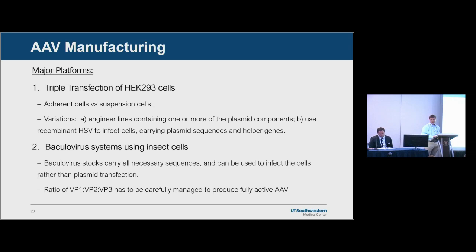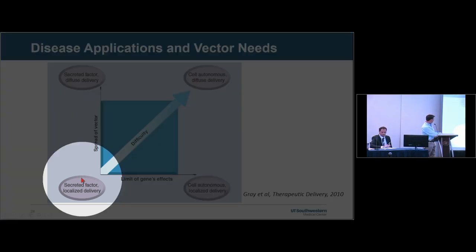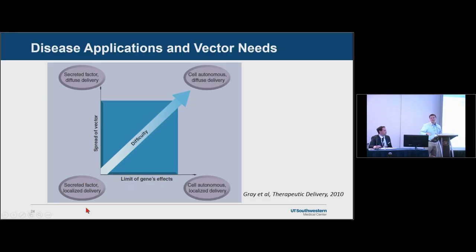For AAV manufacturing, the two major platforms are triple transfection of HEK293 cells or a baculovirus system using insect cells. The baculovirus system can typically achieve higher titers, but you must be careful about getting the right ratio of VP1, VP2, and VP3 to ensure potent particles. Conceptually, the simplest disease to treat is one with localized delivery and a secreted factor, so you don't need to target every cell. The hardest diseases are those requiring treatment of every cell throughout the body — a tall order at this point.